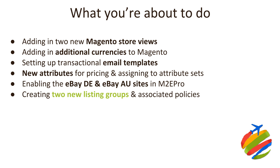Once we've done that, we're then going to be creating two brand new listing groups and all of the associated policies that need to go with them. That's actually going to be quite a big tutorial for us to go through, but you've used M2E Pro before so it's really straightforward. It's just going to be a little bit of a longer one, but dead simple to do.